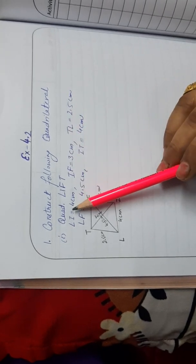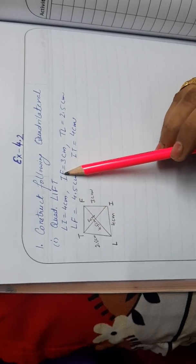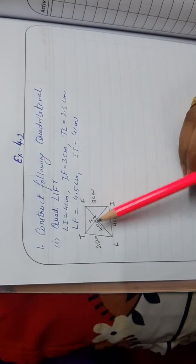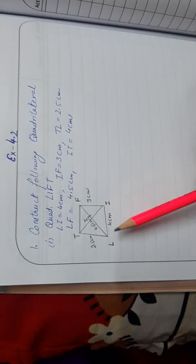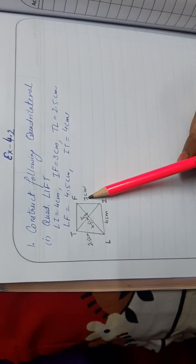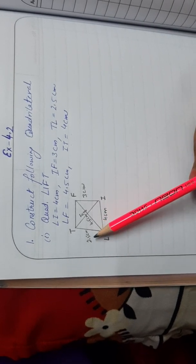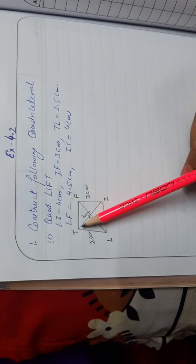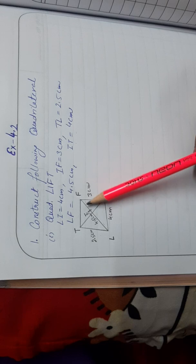Construct the following quadrilateral LIFT, where LI, IF, TL, LF, and IT are given. First of all, we will draw the rough sketch of this quadrilateral and mark the points: LI = 4 cm, IF = 3 cm, TL = 2.5 cm, LF = 4.5 cm, and the other diagonal IT = 4 cm.